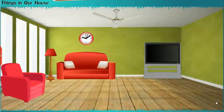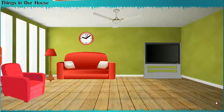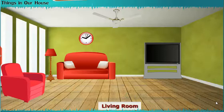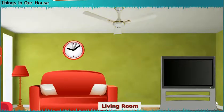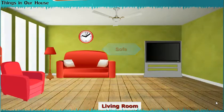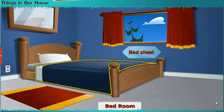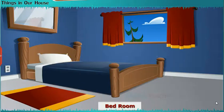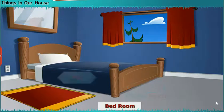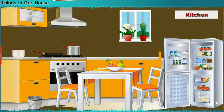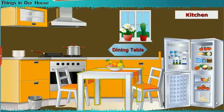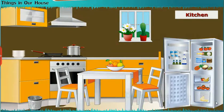Things in our House: Let us learn about the things which are present in our house. Living Room: Fan, Clock, Television, Sofa. Bedroom: Bed sheet, Pillow, Bed, Mat. Kitchen: Dining Table, Fridge, Stove, Dustbin.